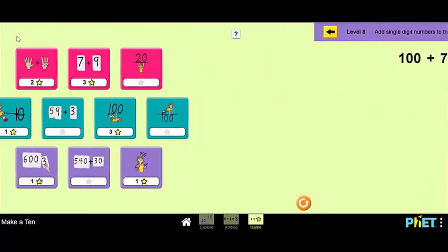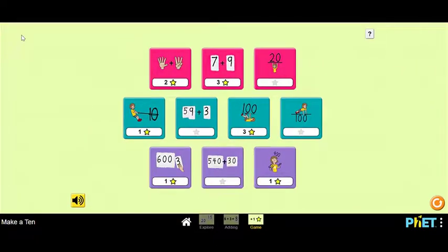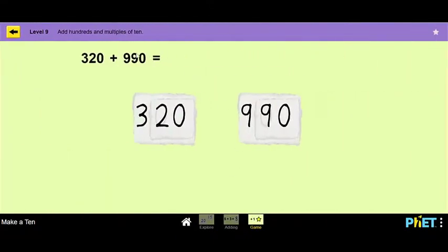Let's try another level. How about we do this one here? So it's adding hundreds and multiples of tens. Okay. So this is, it looks a little bit more tricky. It looks like we have 320 plus 990. We need to find the answer to it. These are big numbers that are harder to add. So we can take our tens places off.